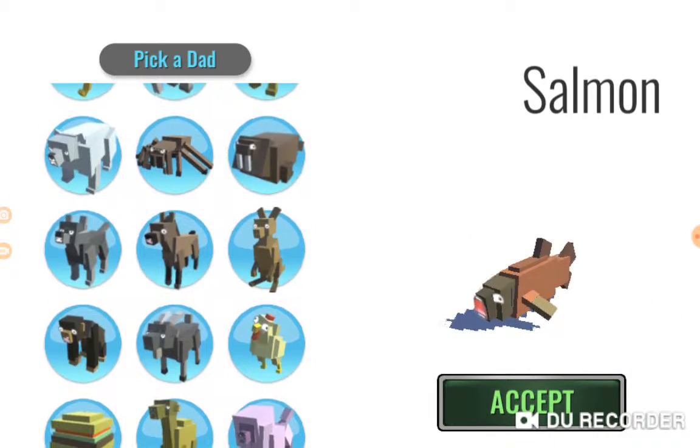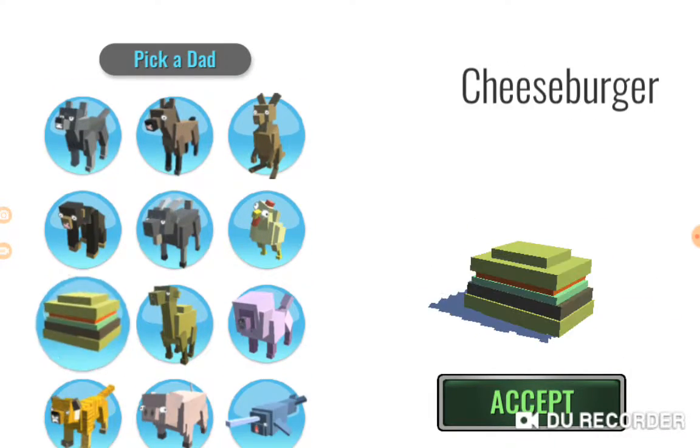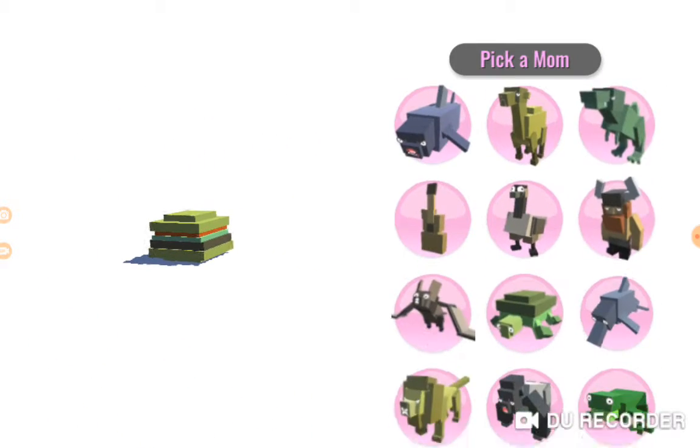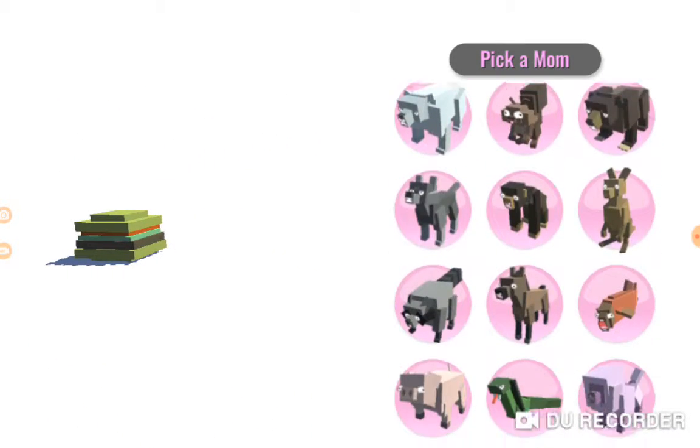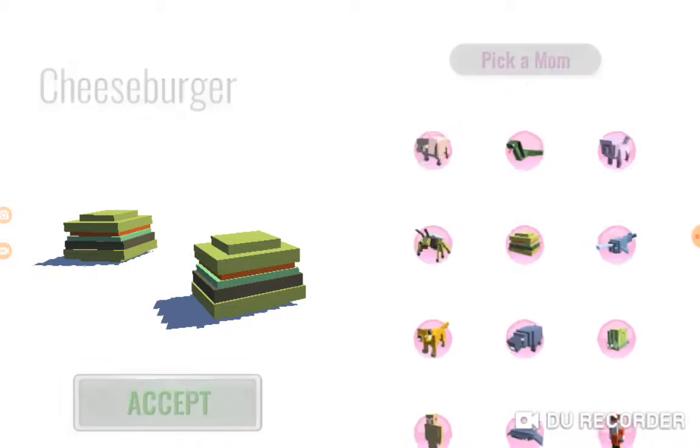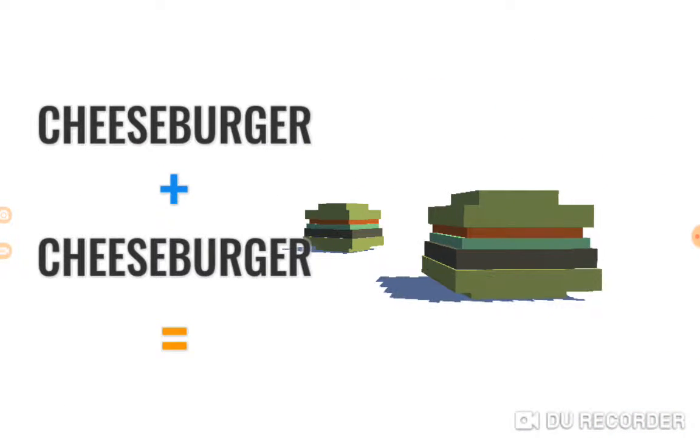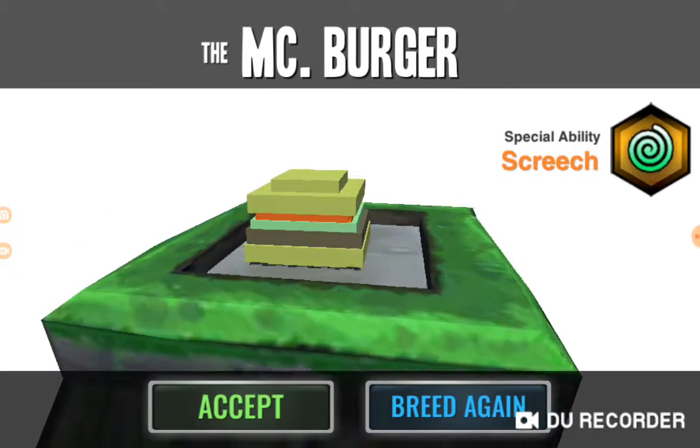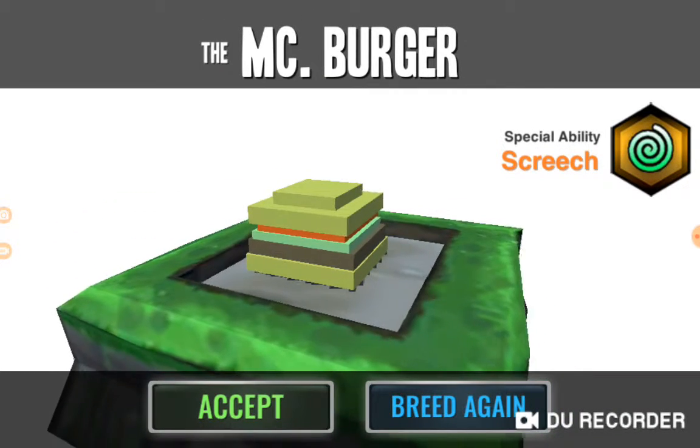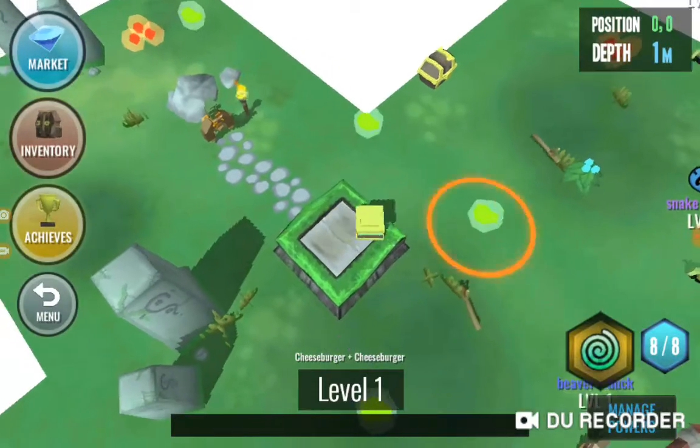Let's see a burger. We get a double decker, I'm guessing if we do a burger with a burger. Cheeseburger plus cheeseburger equals make burger. Let's see what it's like to place a burger.